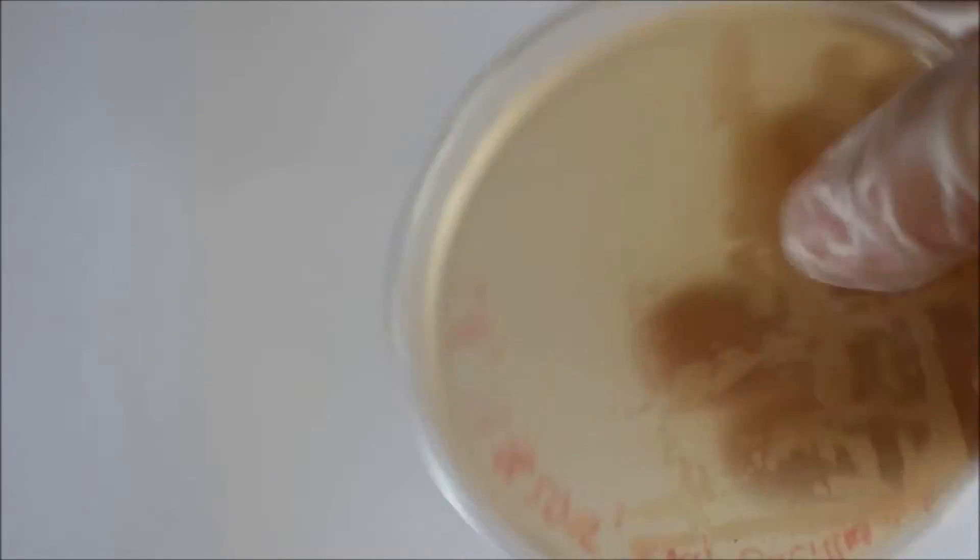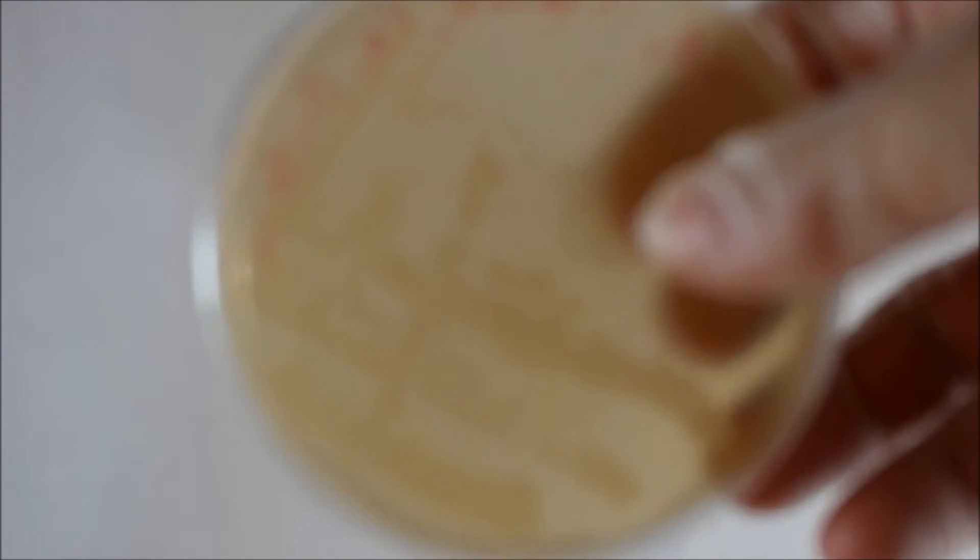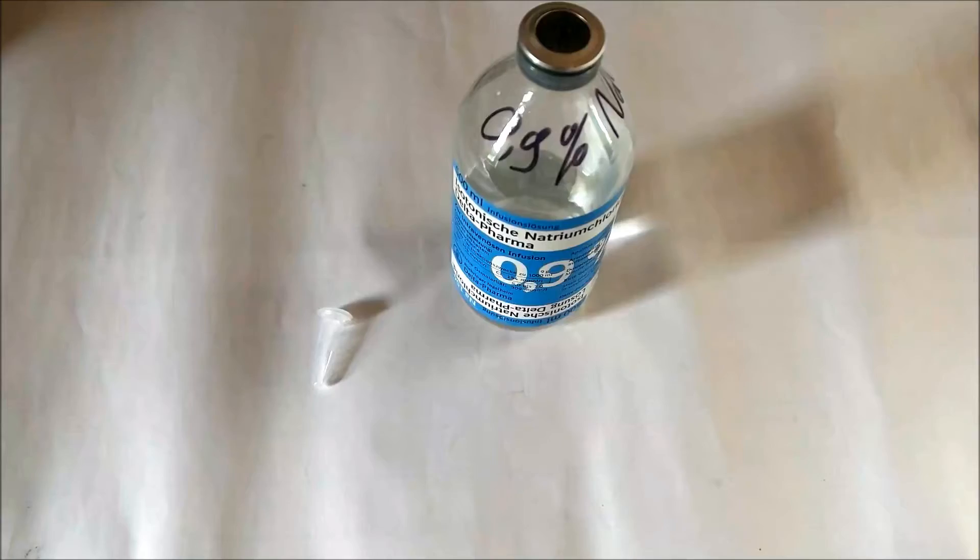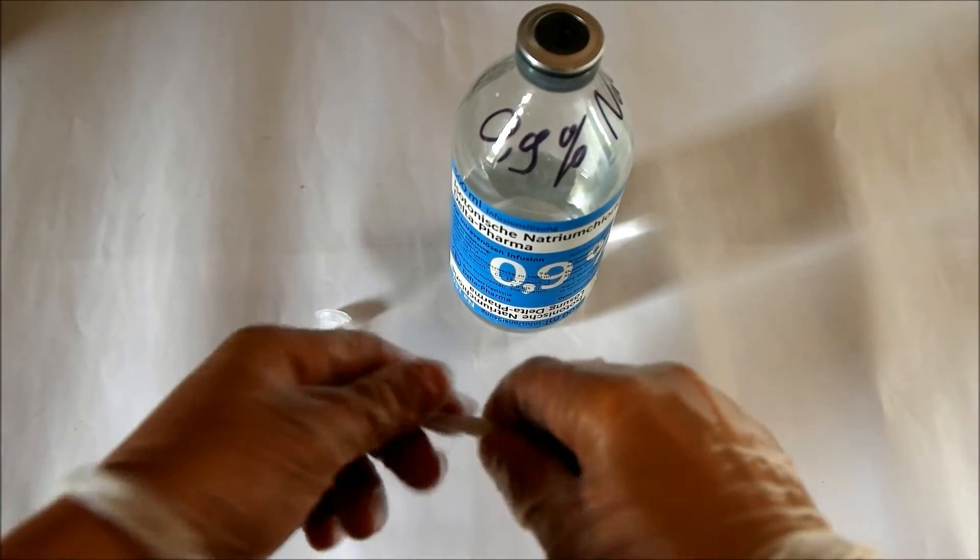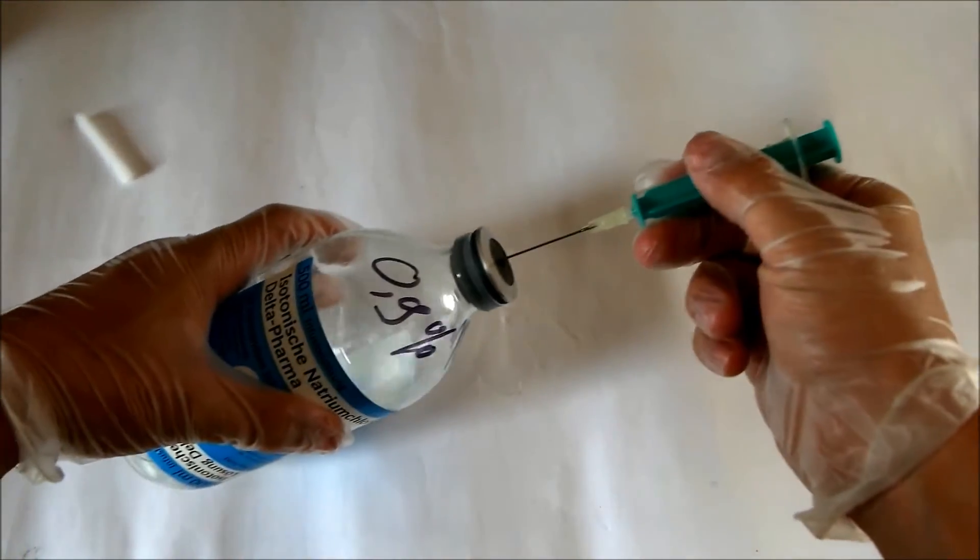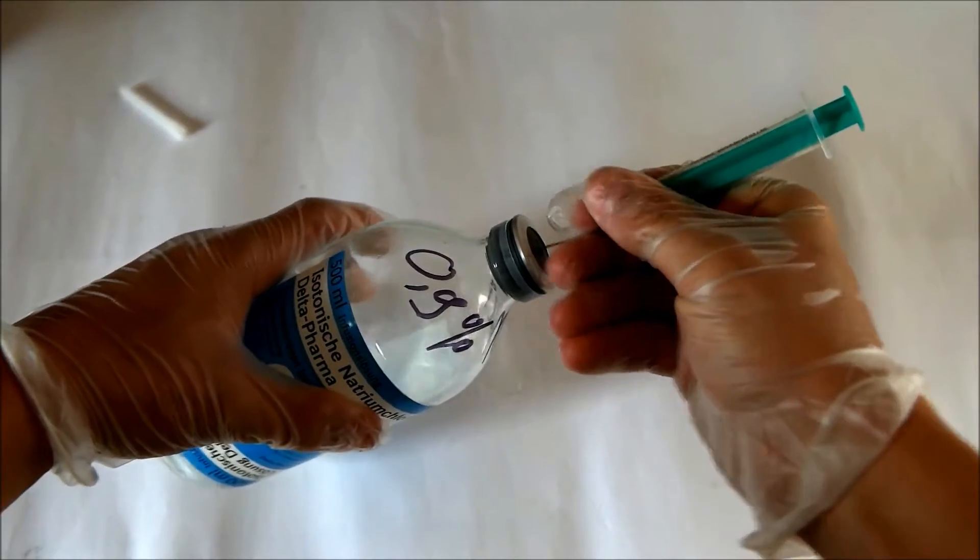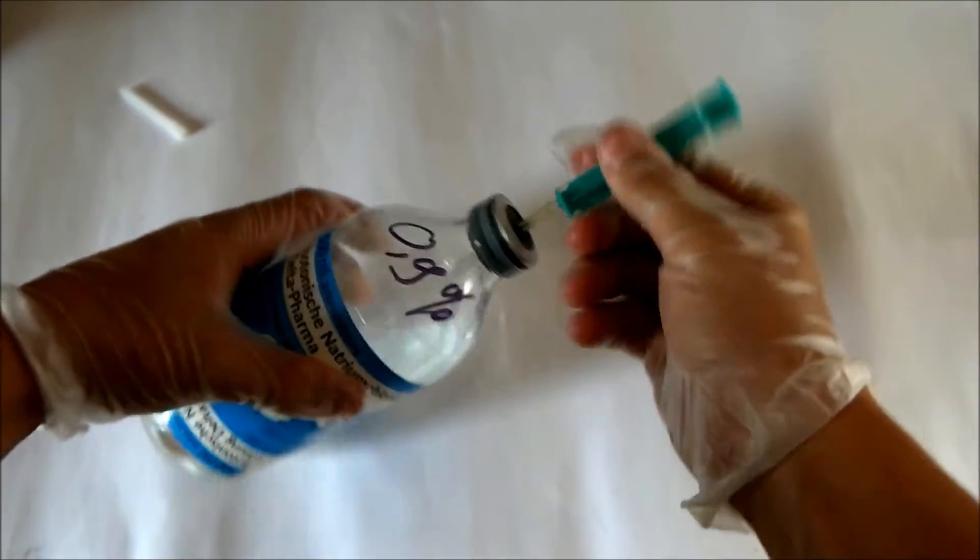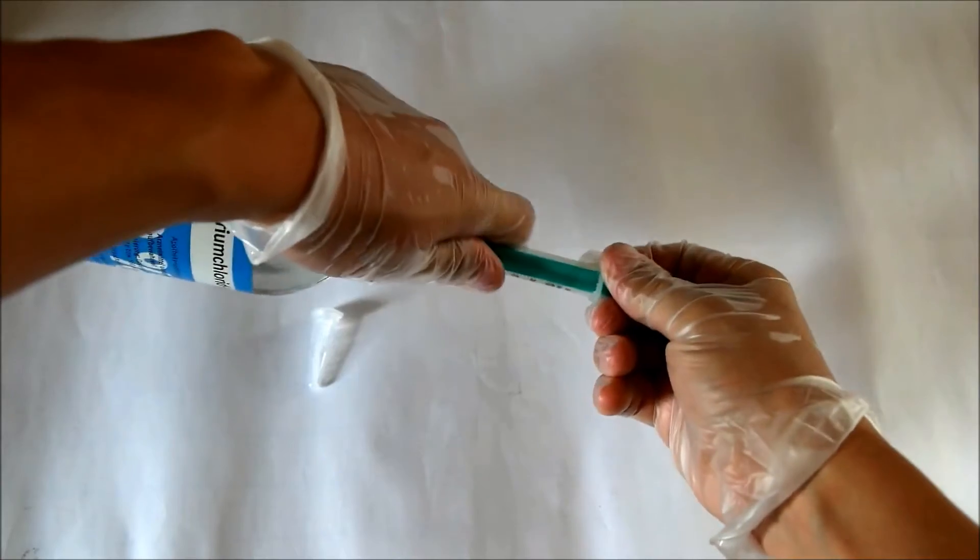Now this is a labeled agar plate from the incubator, and you can see all the colonies right there on the plate after two days. Now put around 100 microliters of the aseptic sodium chloride solution in an eppendorf tube.